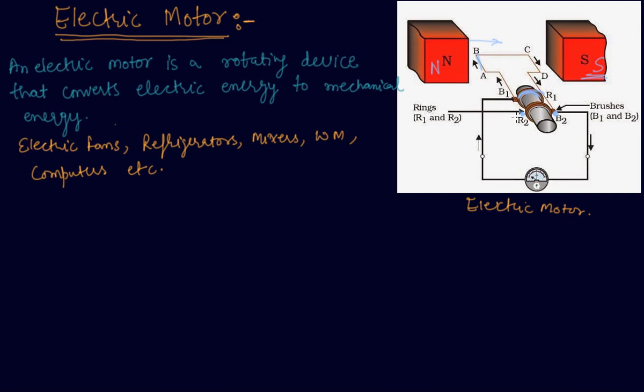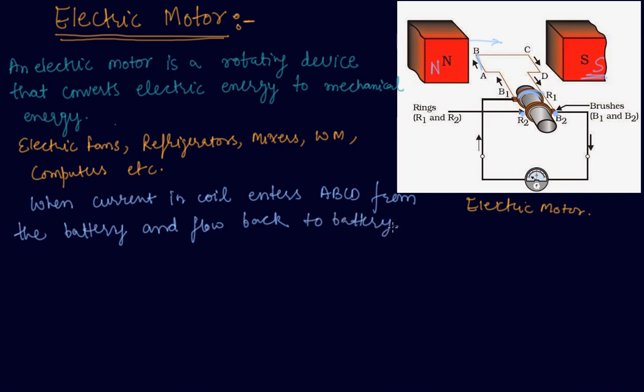So whenever there is a current in the coil, when current in the coil enters ABCD, through this direction from the source battery, and flows back to the battery. Notice that the current in the arm AB of the coil flows from A to B and in the arm CD it flows from C to D. That is opposite to the direction of the current in arm AB.